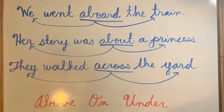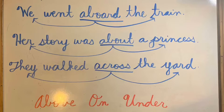The three new prepositions we're learning today are aboard, about, and across. The first sentence: 'We went aboard the train.' The preposition is aboard, showing the connection between 'we,' the pronoun, and 'train,' the noun. Next sentence: 'Her story was about a princess.' About is the preposition, showing the relationship between 'her' and 'princess.' The last sentence: 'They walked across the yard.' Across is the preposition, showing the relationship between the pronoun 'they' and the word 'yard.'